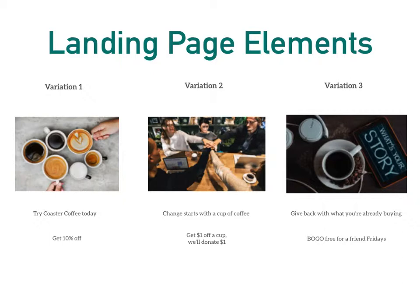For variation two, there will be unifying images and graphics showing people together over coffee or people from Coaster Coffee helping the community. The call to action will be along the lines of 'Change a star to a cup of coffee,' and their promo code will offer get a dollar off a cup and we'll donate a dollar. For variation three, it will be a combination of the two with very strong visuals focusing all around coffee. The call to action will be 'Give back with what you're already buying,' and this will feature a buy one, get one free for a friend Fridays promotion.